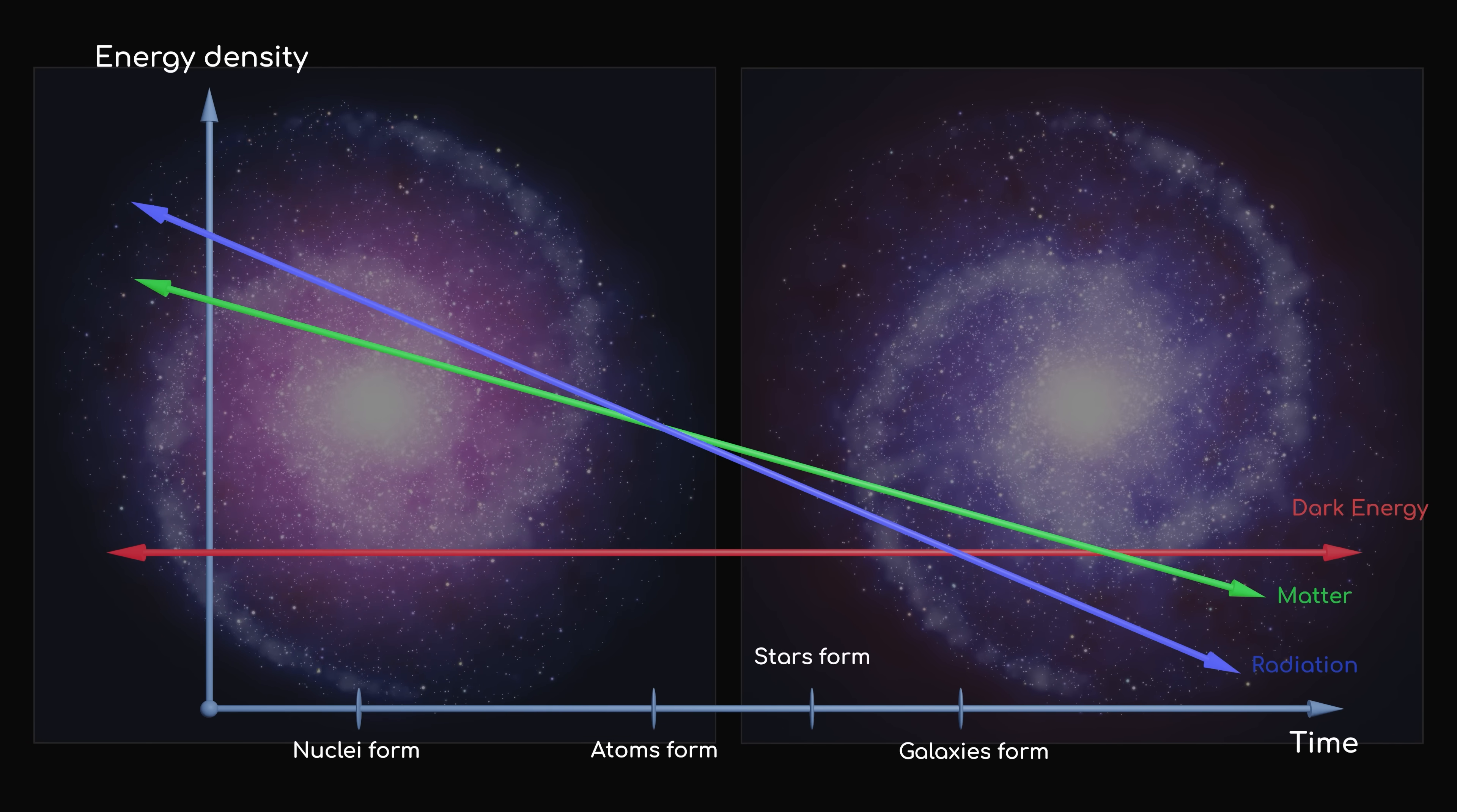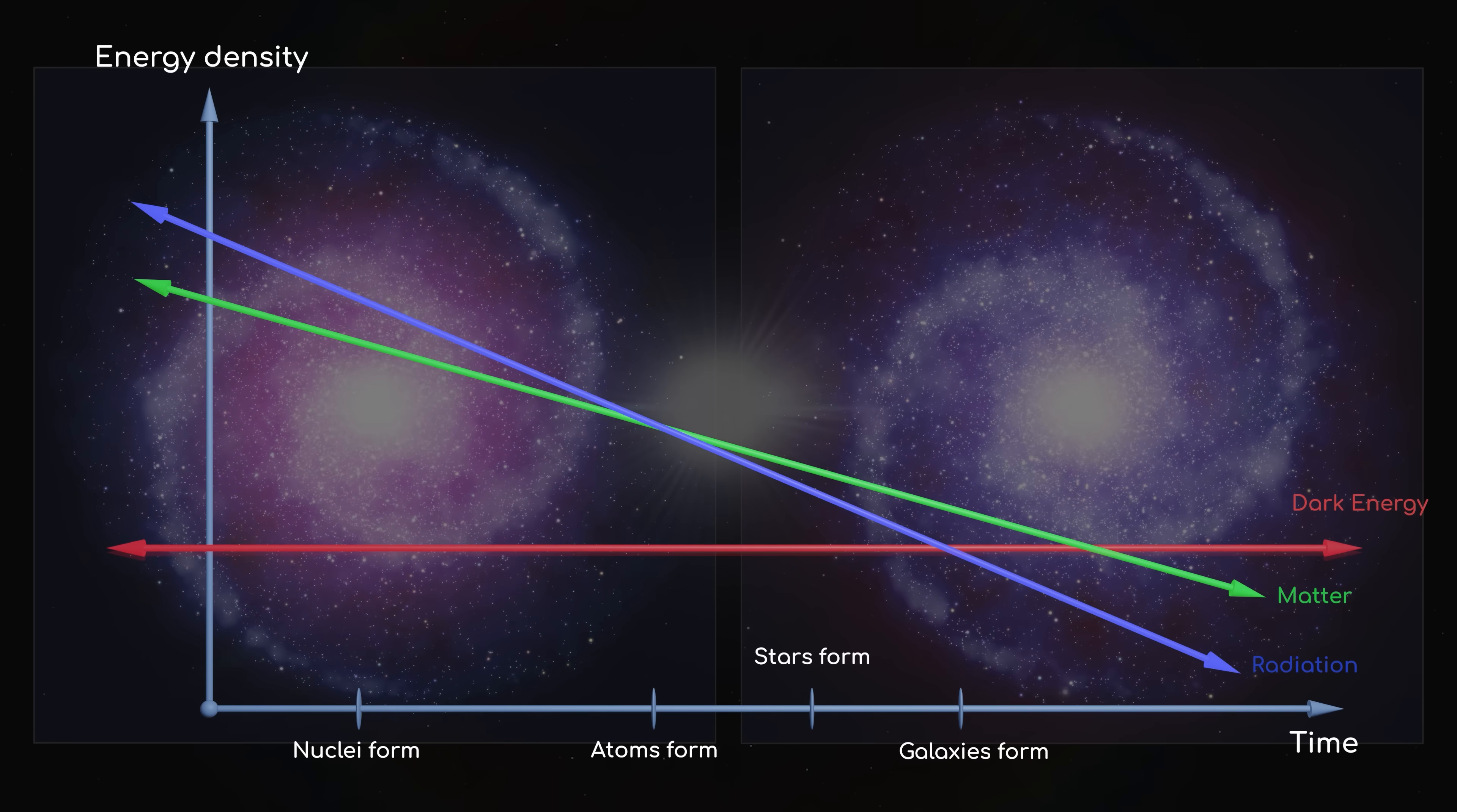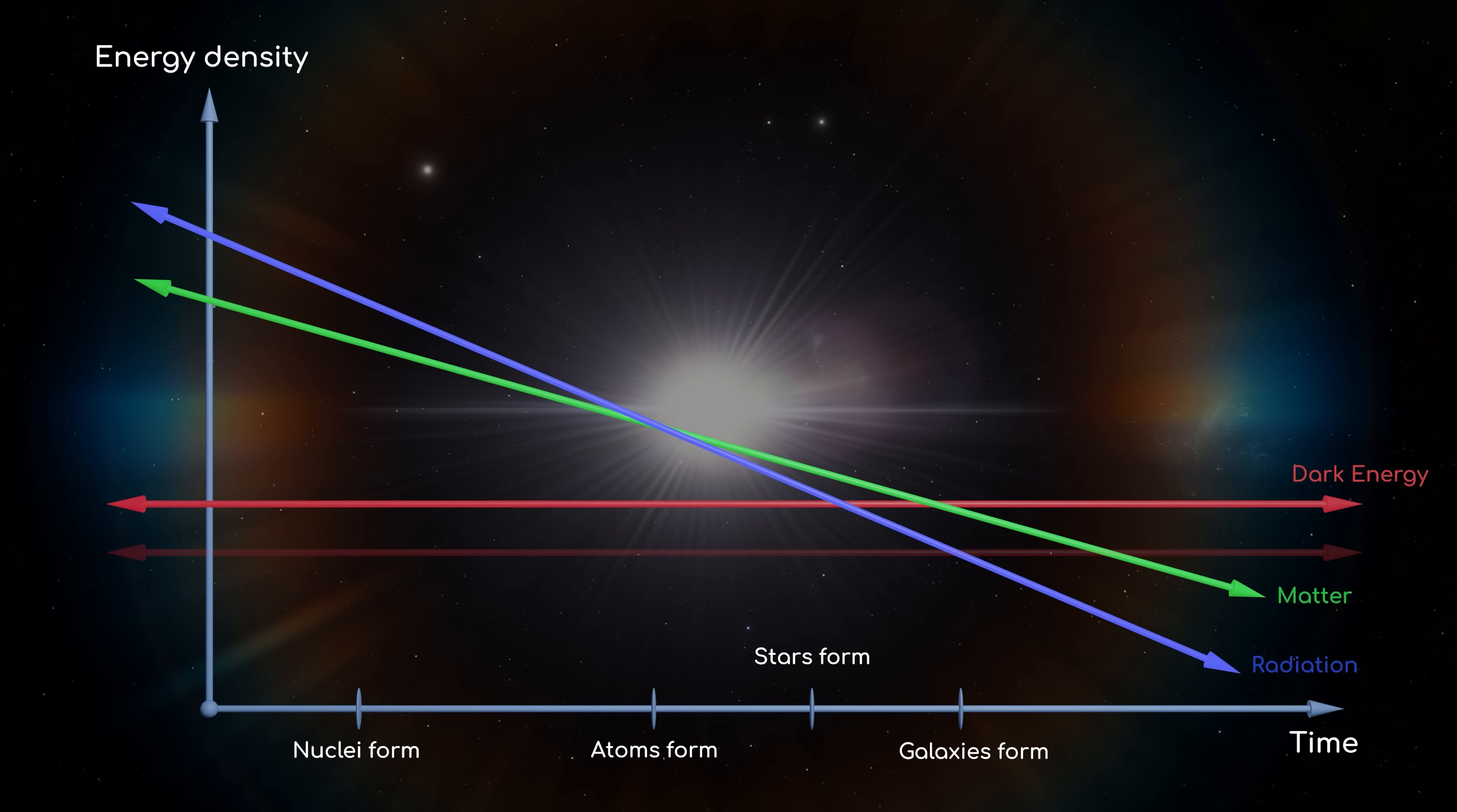But what would have happened if the energy density were larger? Consider what would have happened if the pushing force of dark energy was stronger. It could have been enough to halt the formation of those early galaxies, pushing apart stars more powerfully than their own gravity could pull them together.